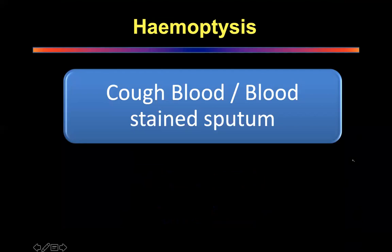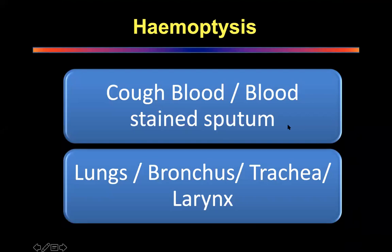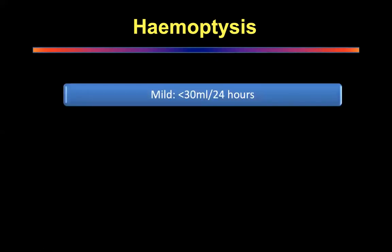Hemoptysis: very simply, you cough up blood or blood-stained sputum — these are the two things to mention when discussing hemoptysis. The blood can come from anywhere — it can come from the lungs, the bronchus, the trachea, or the larynx. Anything infraglottic is actually called hemoptysis. That is the one thing you must remember, and this is the simplest definition.